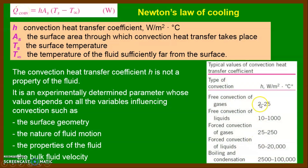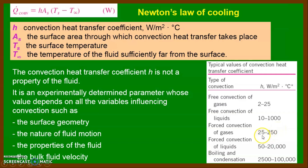Here are some standard values of the convective heat transfer coefficient. For free convection of gases it lies in the range of 2 to 25 W/m²·°C. For free convection of liquids, it is in the range of 10 to 1000. For forced convection of gases — where you apply a blower or fan — the coefficient increases because it depends on velocity. Forced convection of liquids, boiling, and condensation values are also given in this slide.